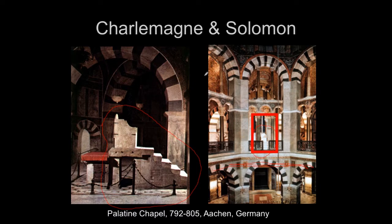Charlemagne thought about how to remake every part of society. One close counselor was Einhard — a dwarf, very clever, a worker in silver — who eventually wrote the biography of Charlemagne. If you want to know where George Martin got the idea for Tyrion, the clever dwarf with his hands in everybody's pies, that's where it comes from. Einhard's biography of Charlemagne makes him out to be a great king, and a lot of that has to be taken with a grain of salt.